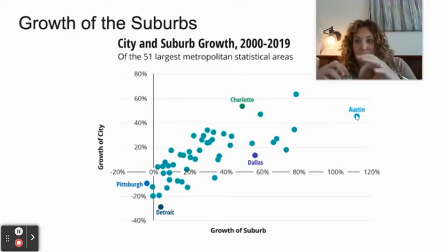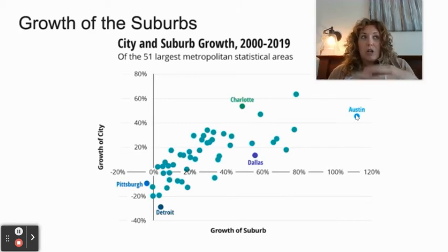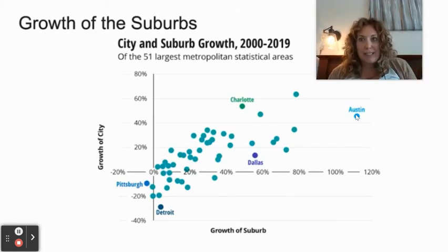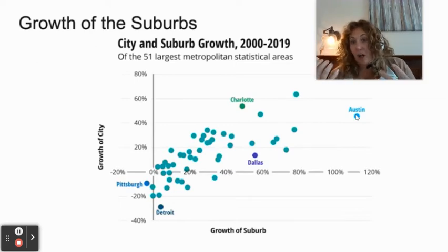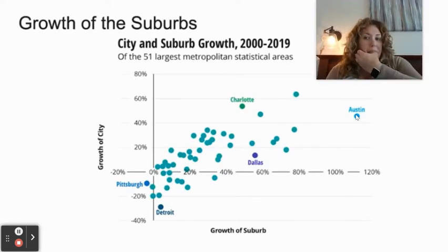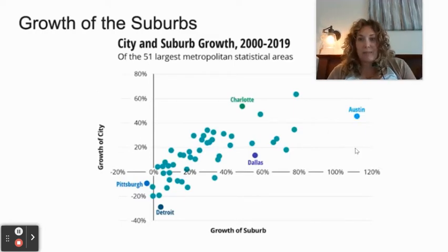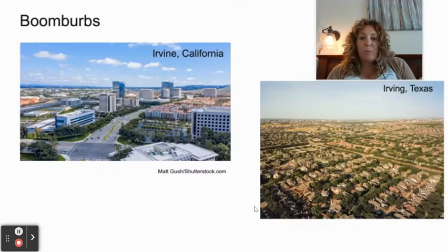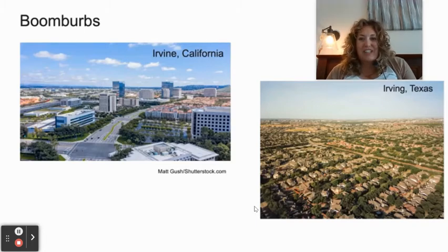Denver is a great example — in my lifetime, several new places have been created: Greenwood Village, Highlands Ranch, Stapleton where the old airport was converted to housing, Lone Tree, Centennial. These are all new towns invented in Denver in my lifetime. I'm honestly surprised Denver isn't on this suburb-growth map.